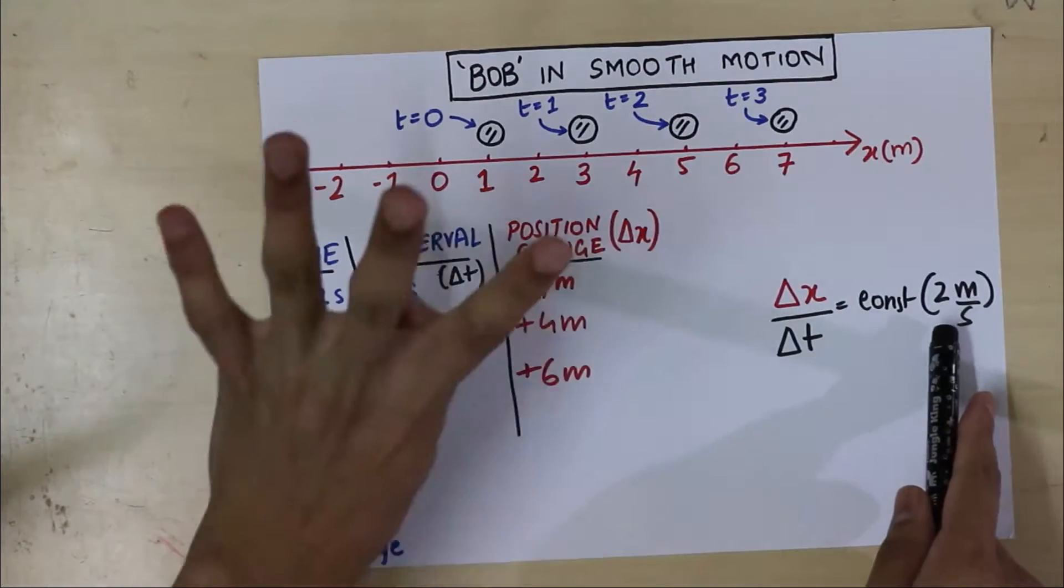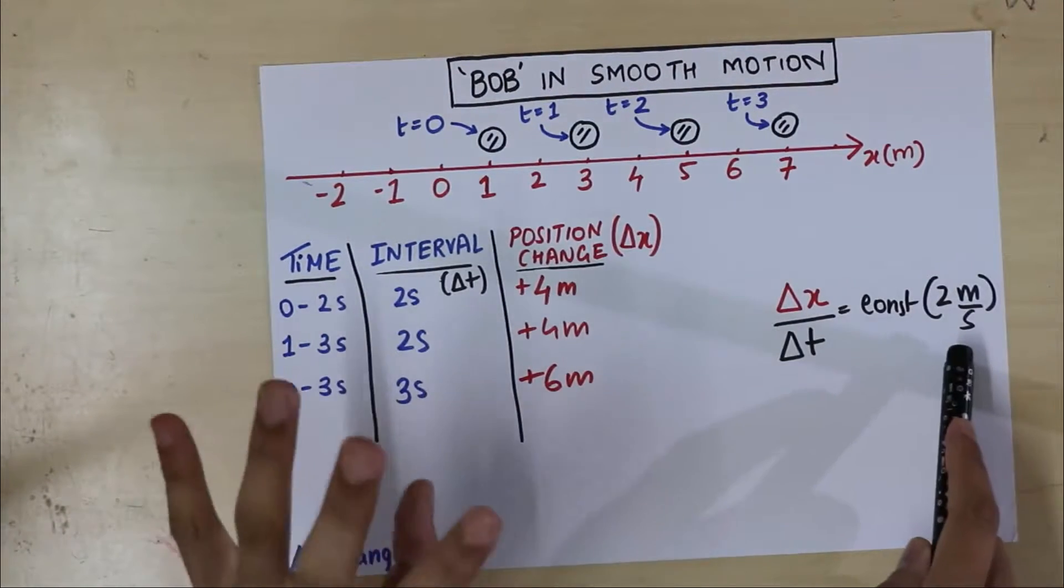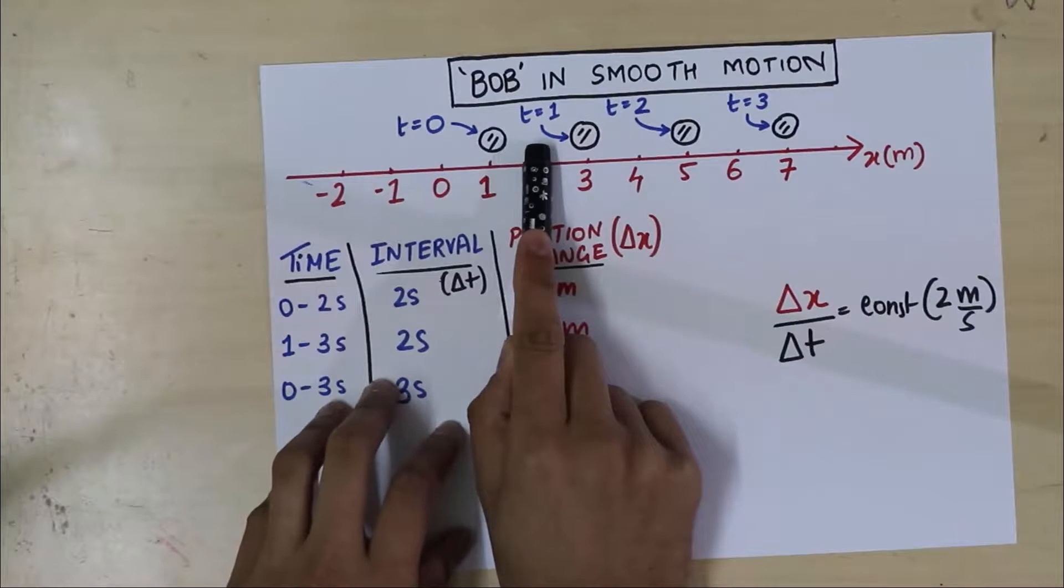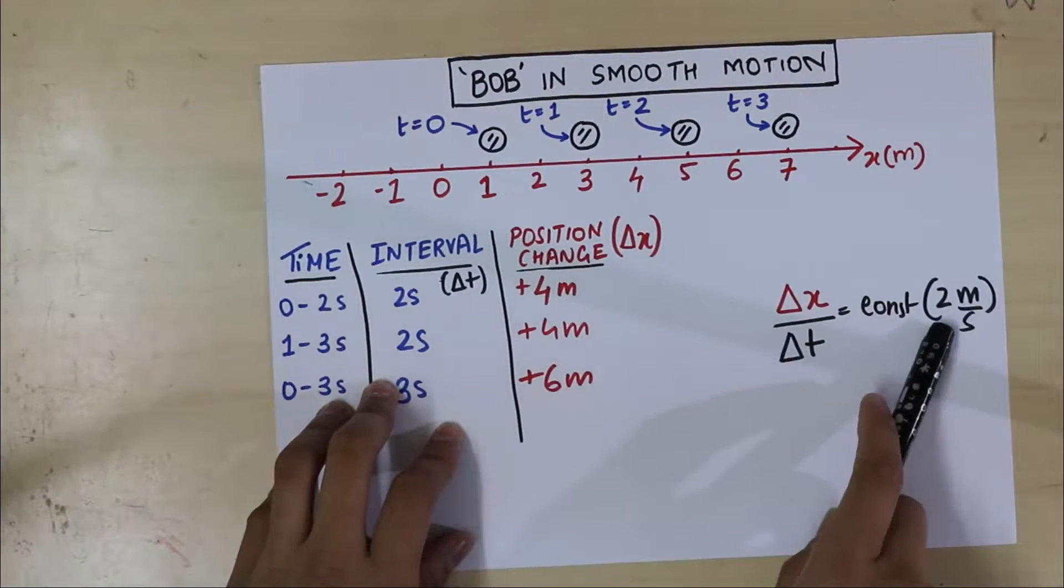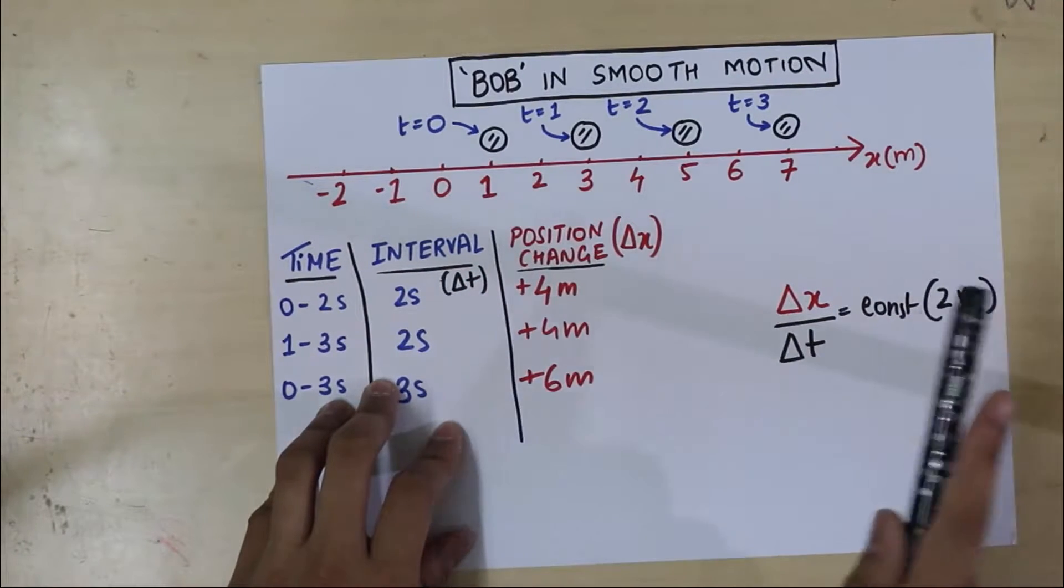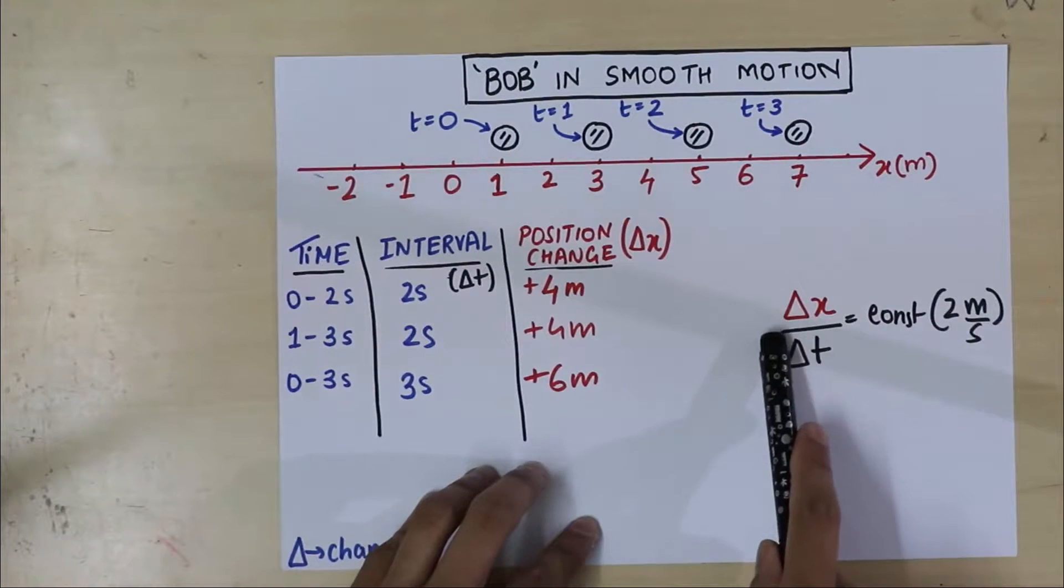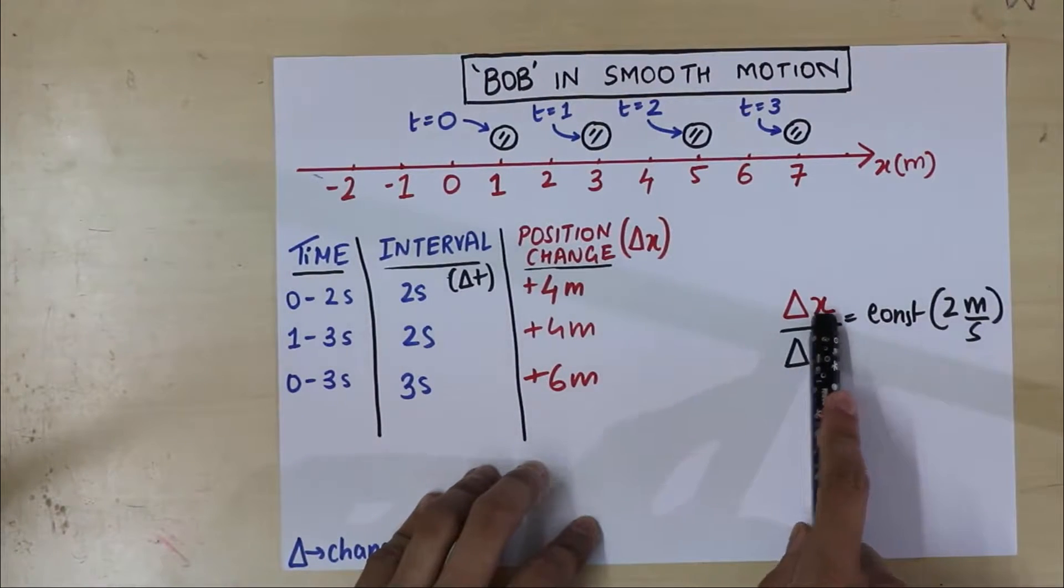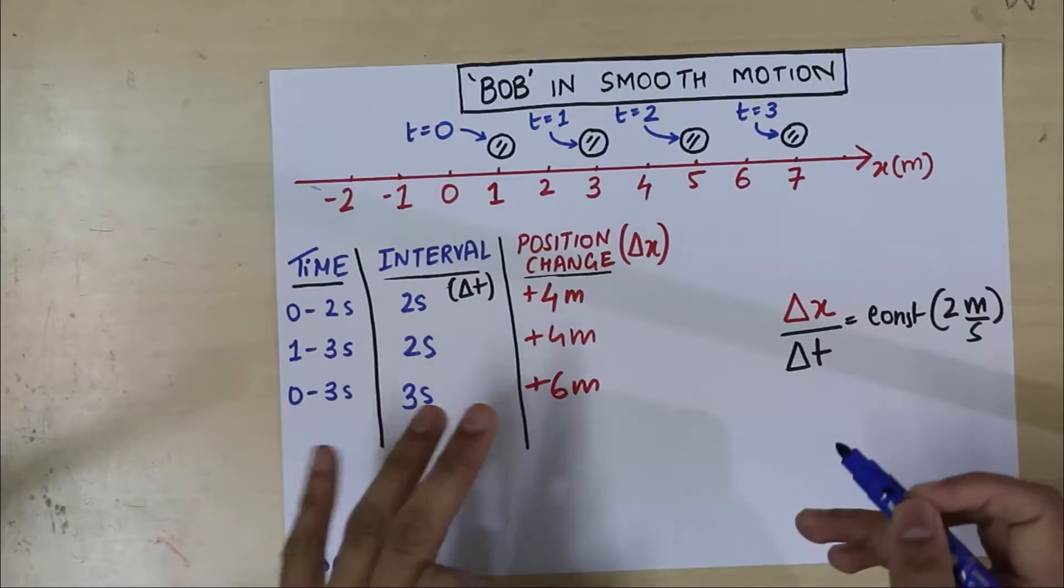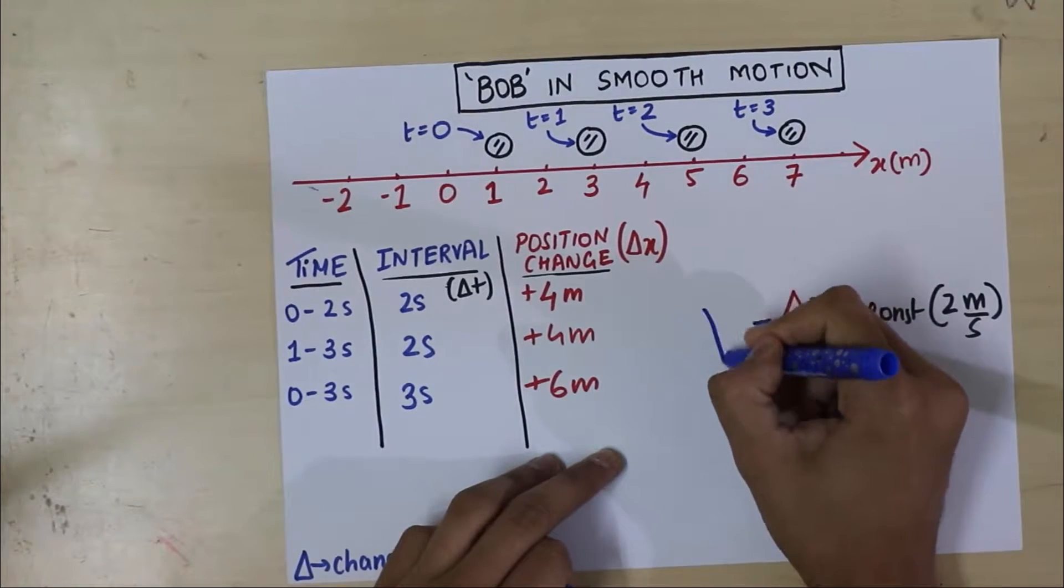The smoothness here is the way Bob is changing its position. It's doing it uniformly for every second is increasing its position by 2 meters. So the ratio is always going to remain a constant regardless of where you do the math, wherever you find this. And you don't have to wait for 1 second. Even if you wait for half a second, you will find the change in position to be 1 meter, such that 1 by half still gives you 2. So regardless of how small time interval you take, you will always find that delta x by delta t is going to remain 2. And that's the characteristic feature of smooth motion. So the rate at which the position is changing, that is a constant.